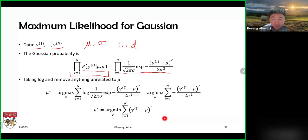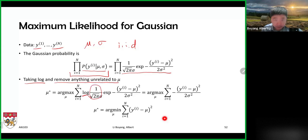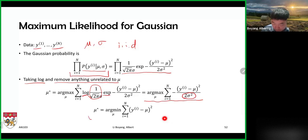We take the log of the whole expression, removing terms unrelated to mu. The log cancels with the exponential, and the denominator two-sigma-squared is unrelated to mu. After simplification, we find the best mu as the one that minimizes the sum of squared differences between y and mu.